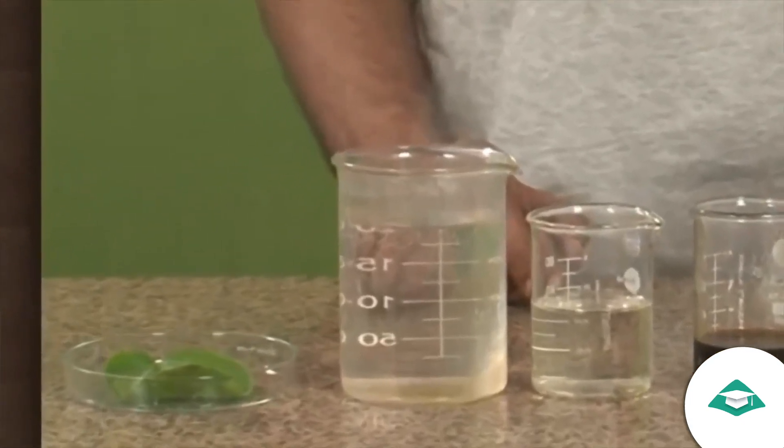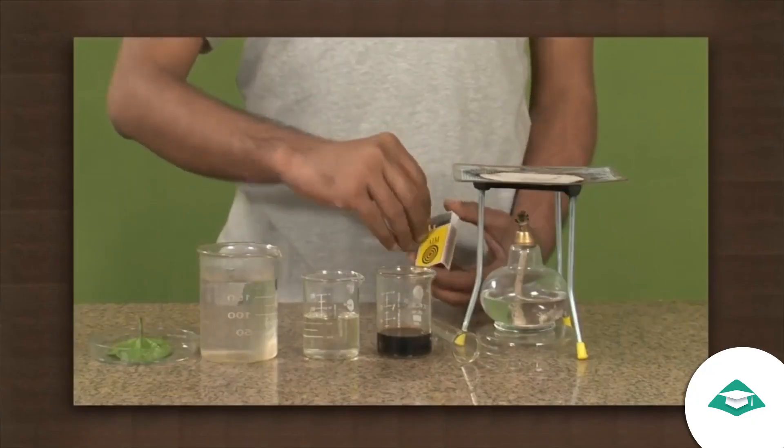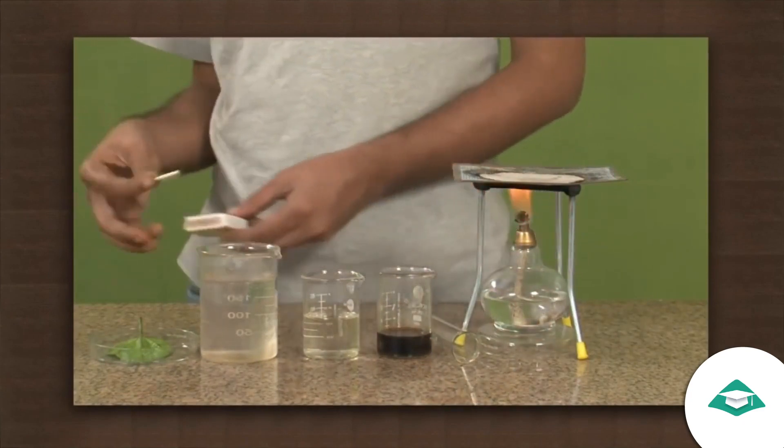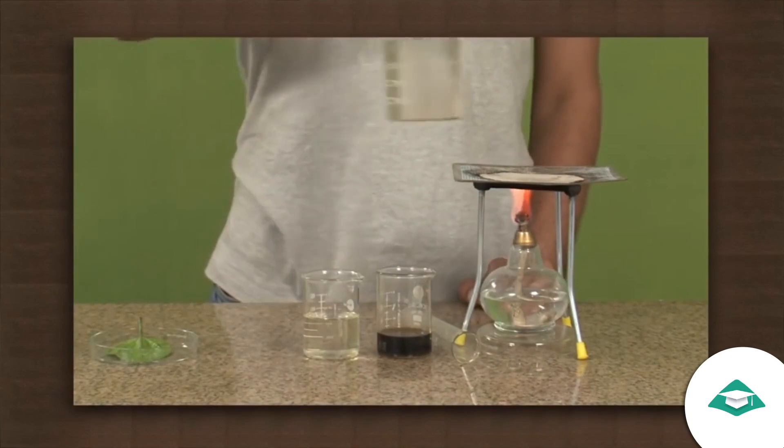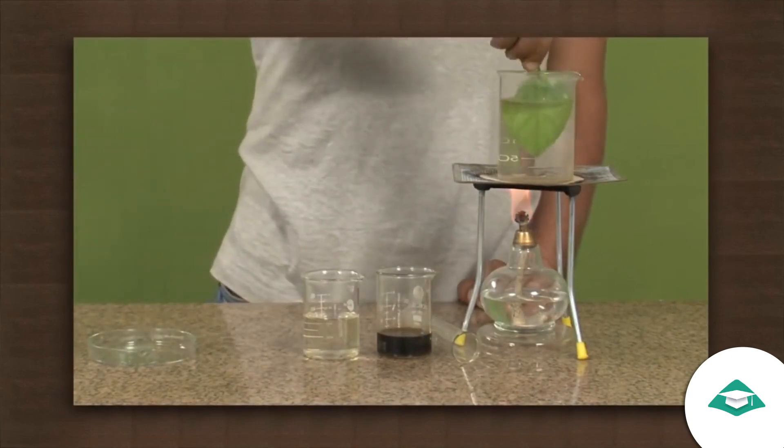Keep the leaf in a petri dish (a leaf that was kept in sunlight for a few hours). Ignite the spirit lamp, place the leaf in the beaker of hot water, and place the beaker on the tripod stand. Heat the water until the cell membrane breaks.